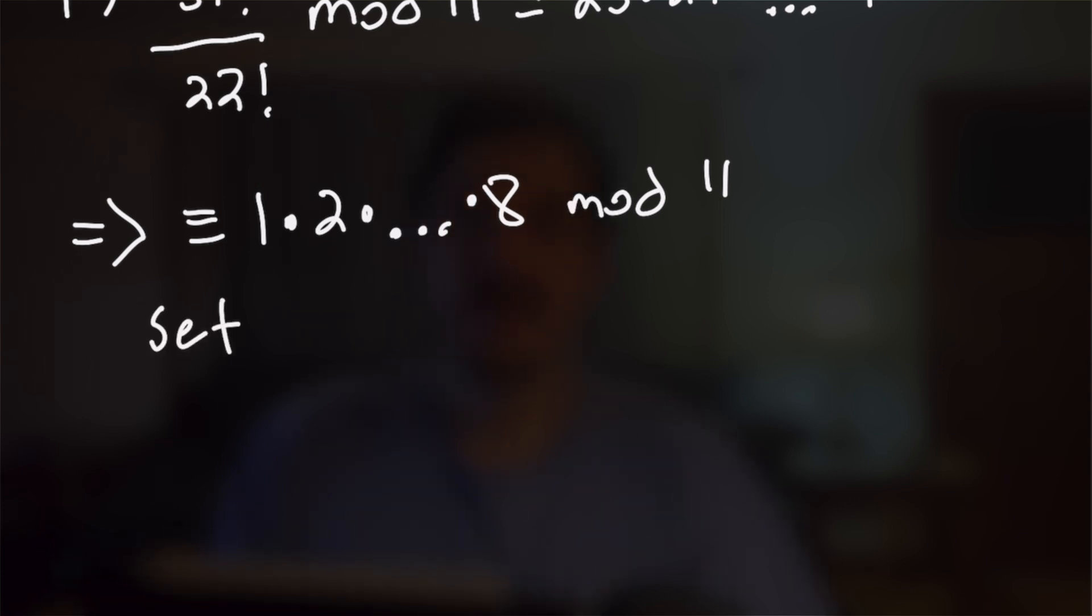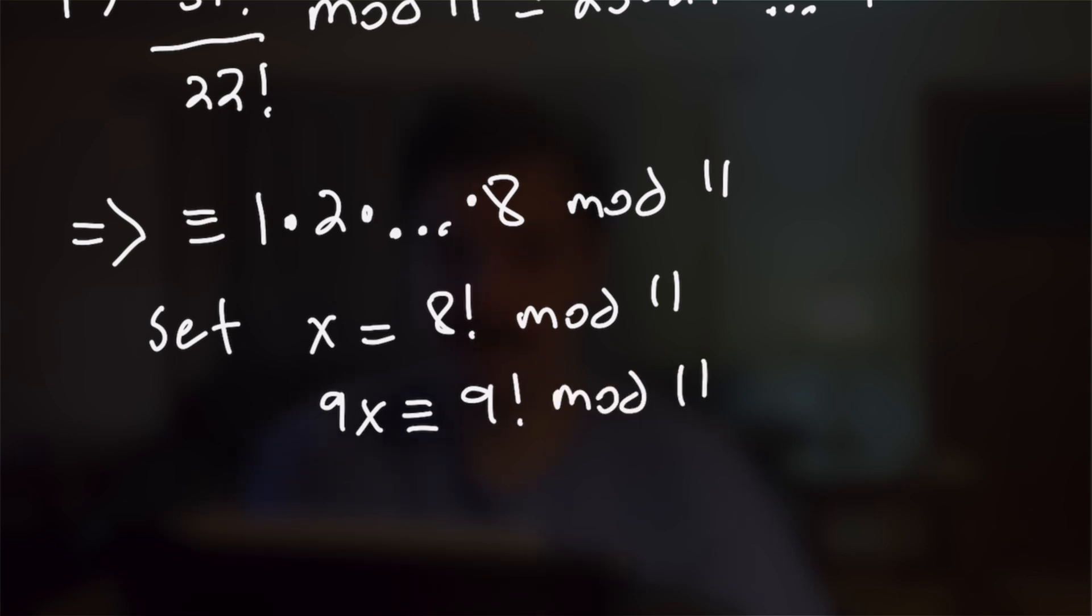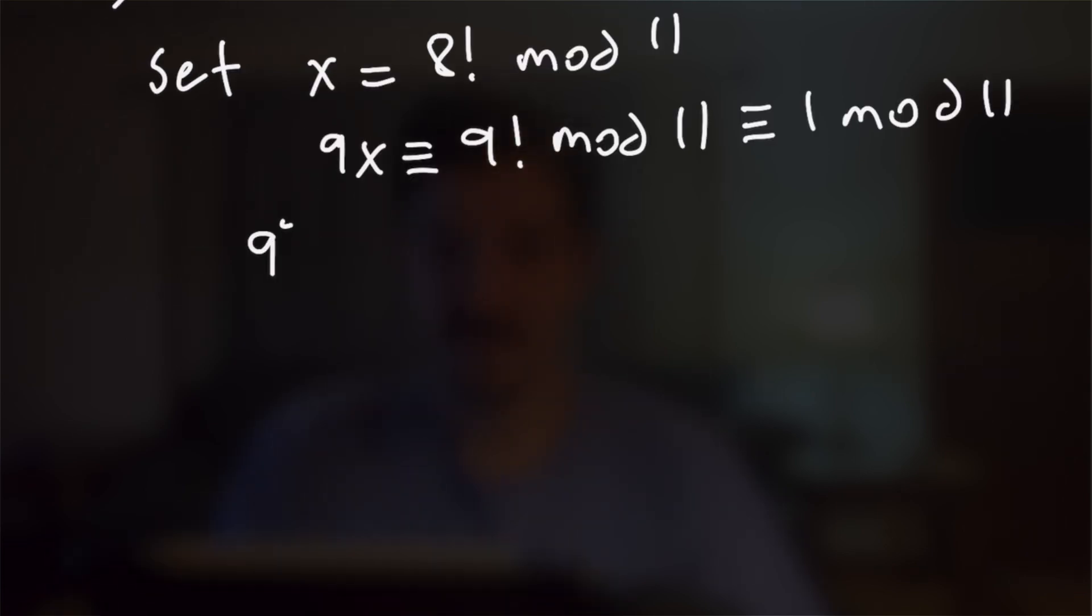Now just like before, we're going to set x equal to 8! and multiply both sides by 9 so that we can apply Wilson's theorem to this and we will get that 9x is congruent to 1 mod 11. And the inverse of 9 mod 11 is 5. So x is congruent to 5 mod 11. And that will finish this one off.